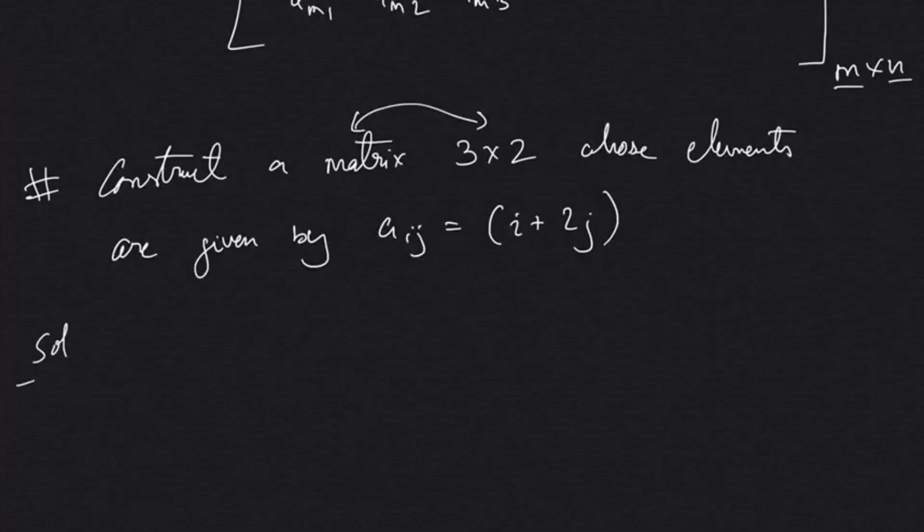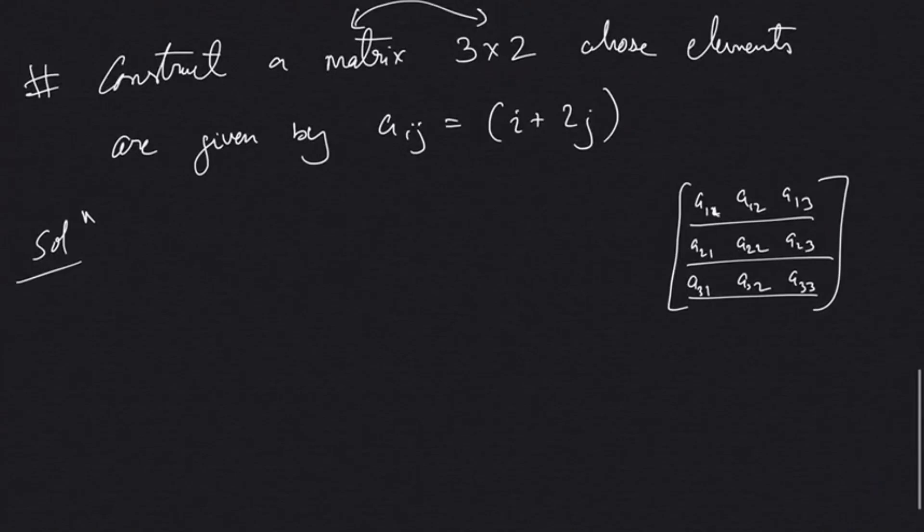Let's figure out how this 3 by 2 matrix looks. It has 3 rows and 2 columns. So we have row 1, row 2, row 3 making three rows, and two columns. This is how our matrix should look: row 1, row 2, row 3—three rows and two columns. Our general element is given as i + 2j.